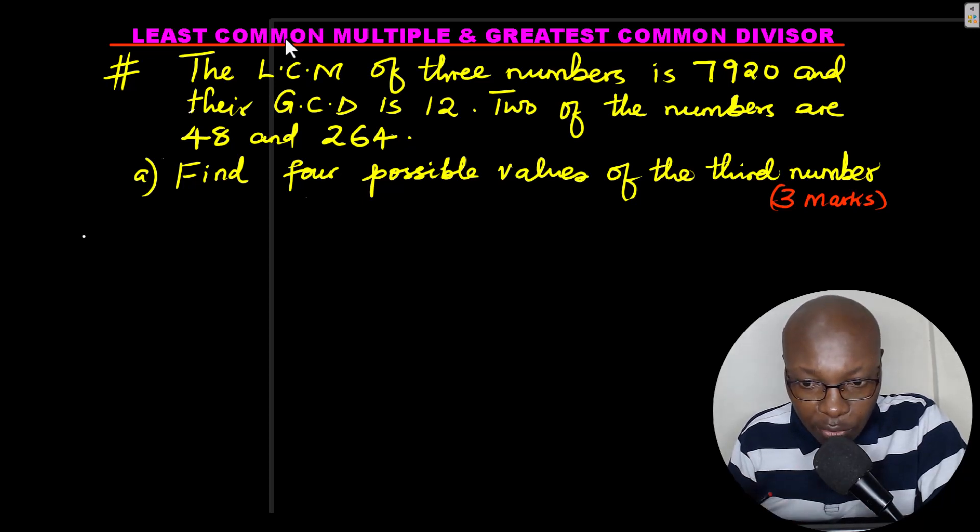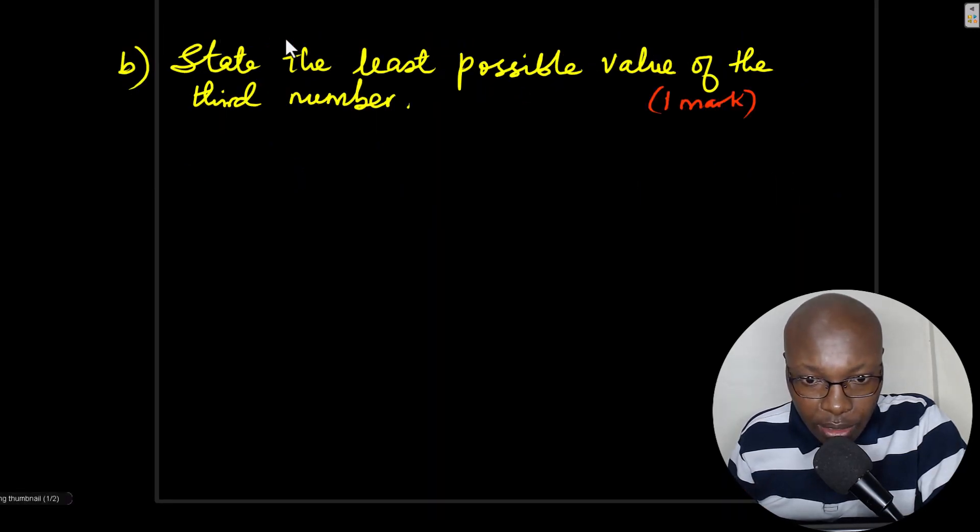Part A, find the four possible values of that number, three marks. Then part B, state the least possible value of the third number.